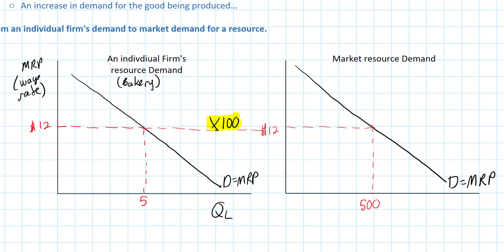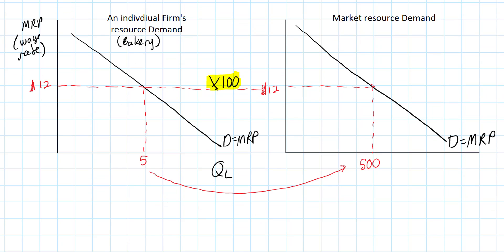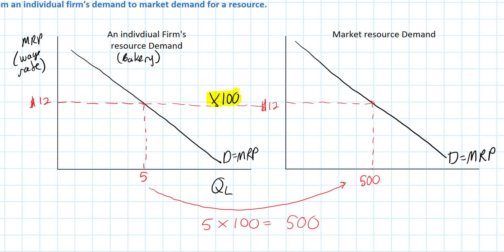So if there are 100 identical firms or bakeries employing bakers in this market, we multiply the number of employees at each individual bakery by the number of firms and we get a total level of employment. The market demand for a resource is the horizontal sum of the individual marginal revenue product curves of all the firms hiring workers in that market. We need to put a vertical axis label of MRP, which equals the wage rate. We can see that if the wage rate is $12, then 500 workers would be employed.